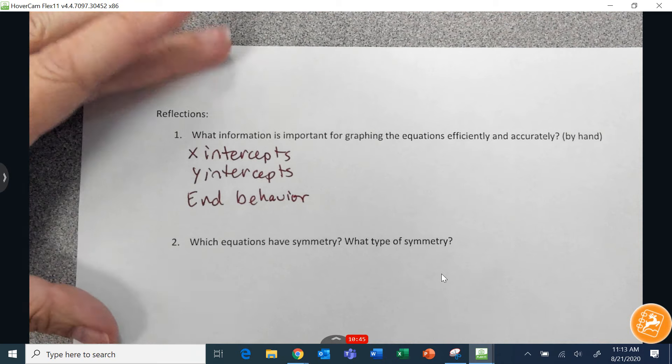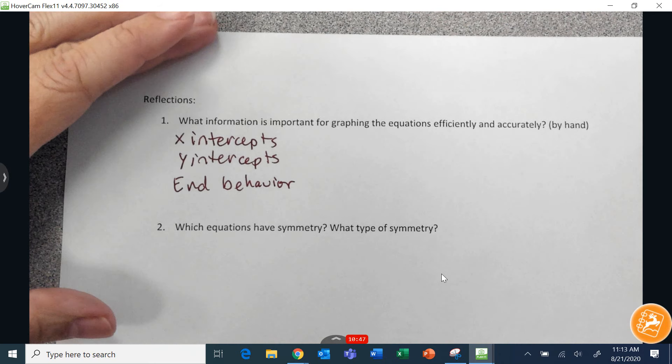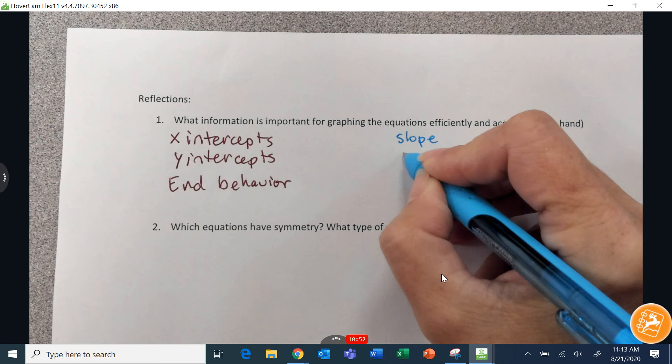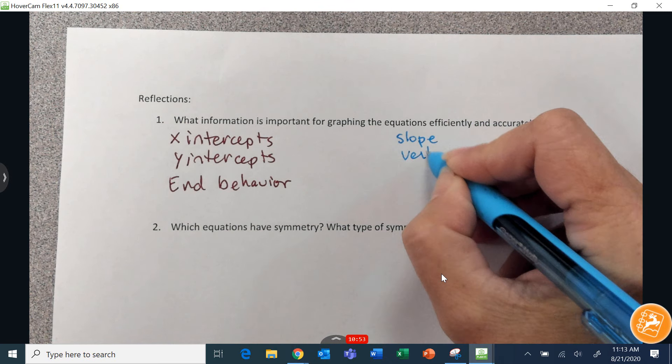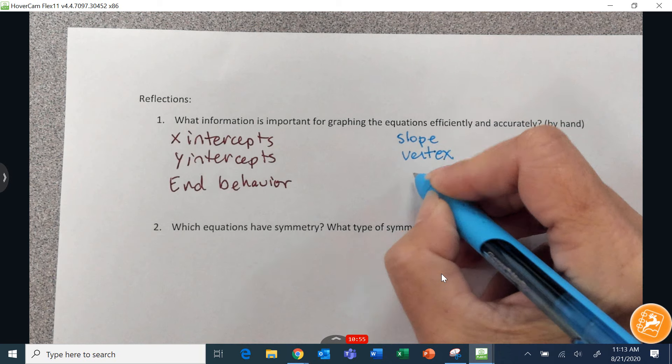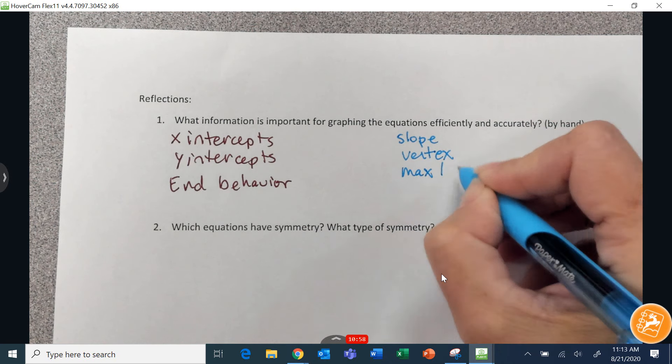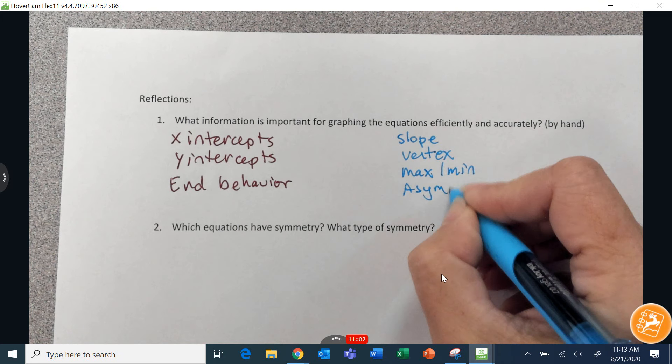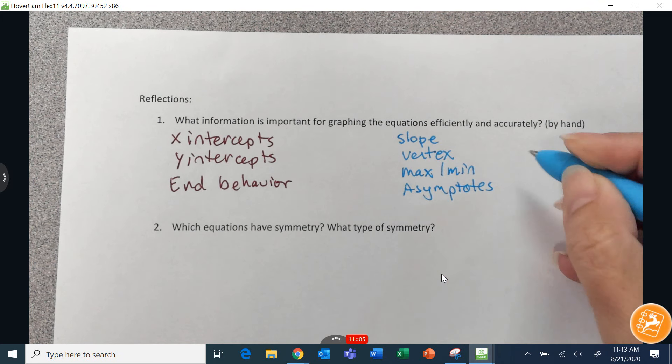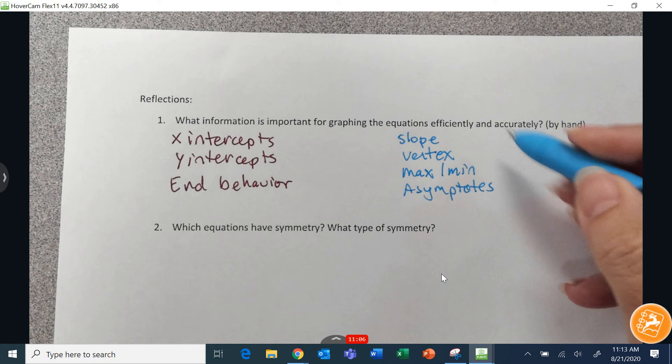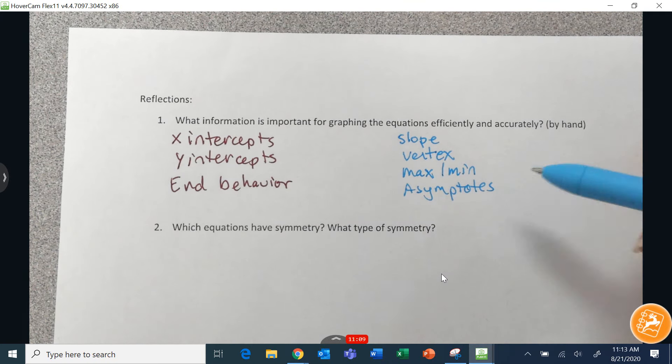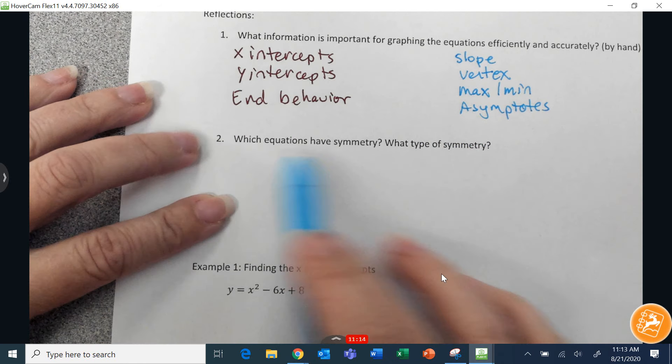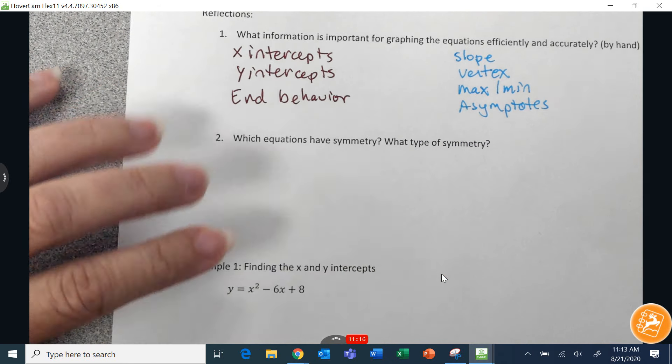And then some other things that are important but does not pertain to every single graph could be slope, vertices, I'll just put vertex, max or min values, and asymptotes. And there might be more. These are things that pertain to specific kinds of graphs. And then which equations have symmetry, what type of symmetry. I kind of went over that as I was drawing out the graph.